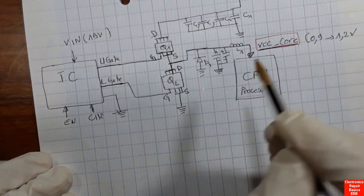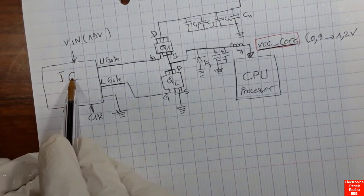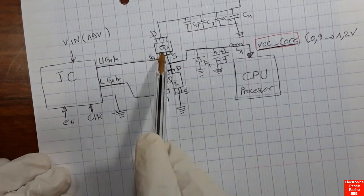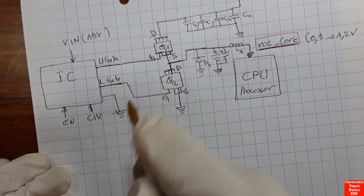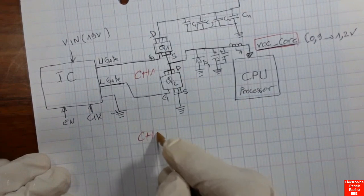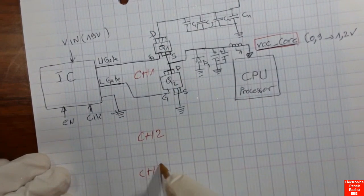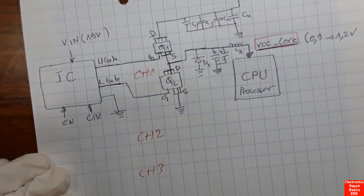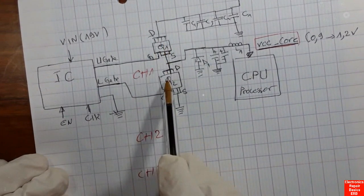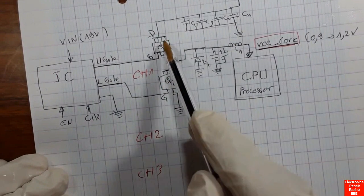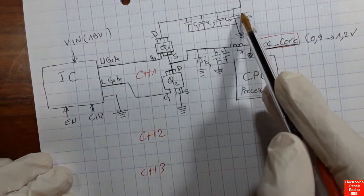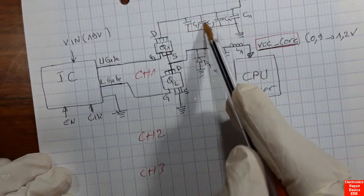The voltage generated between the two MOSFETs is applied to some components: a diode for protection purposes, capacitors to filter the voltage — because we need a pure voltage — and an inductor, which you will always find at the output. This gives us the VCC core of about 0.9 to 1.2 volts, depending on the type of CPU and motherboard.